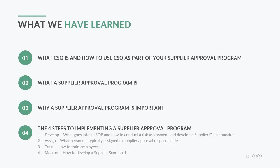To summarize, we learned what a supplier approval program is, why it's important, and the four steps to implementing one: develop, assign, train, and monitor.